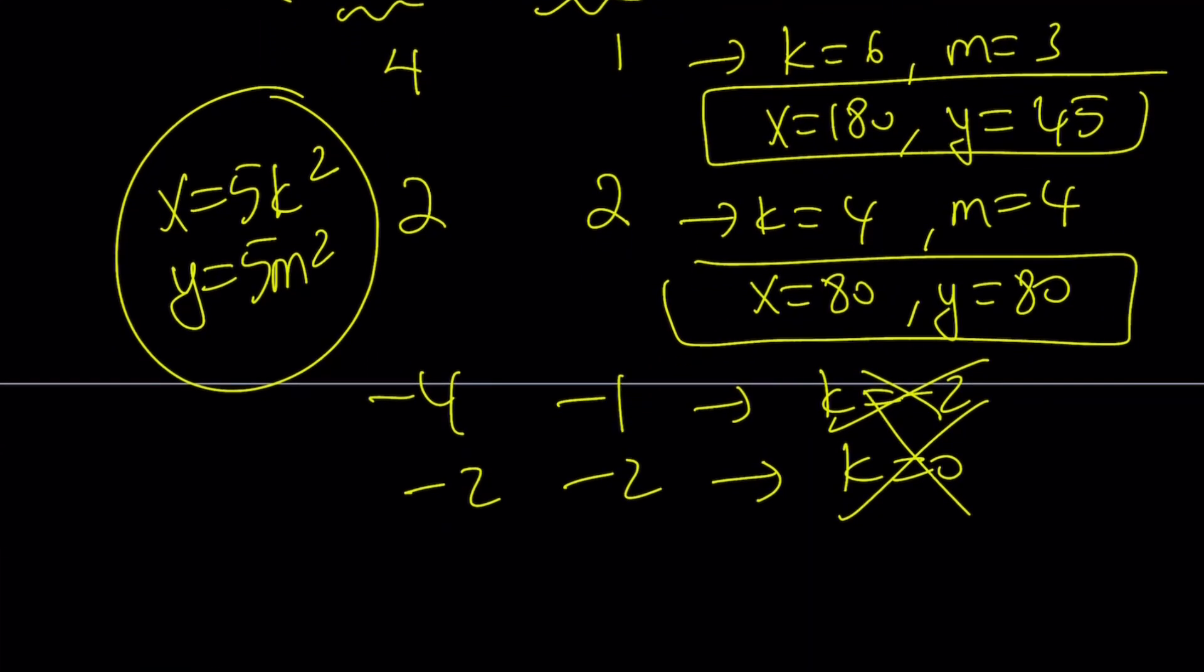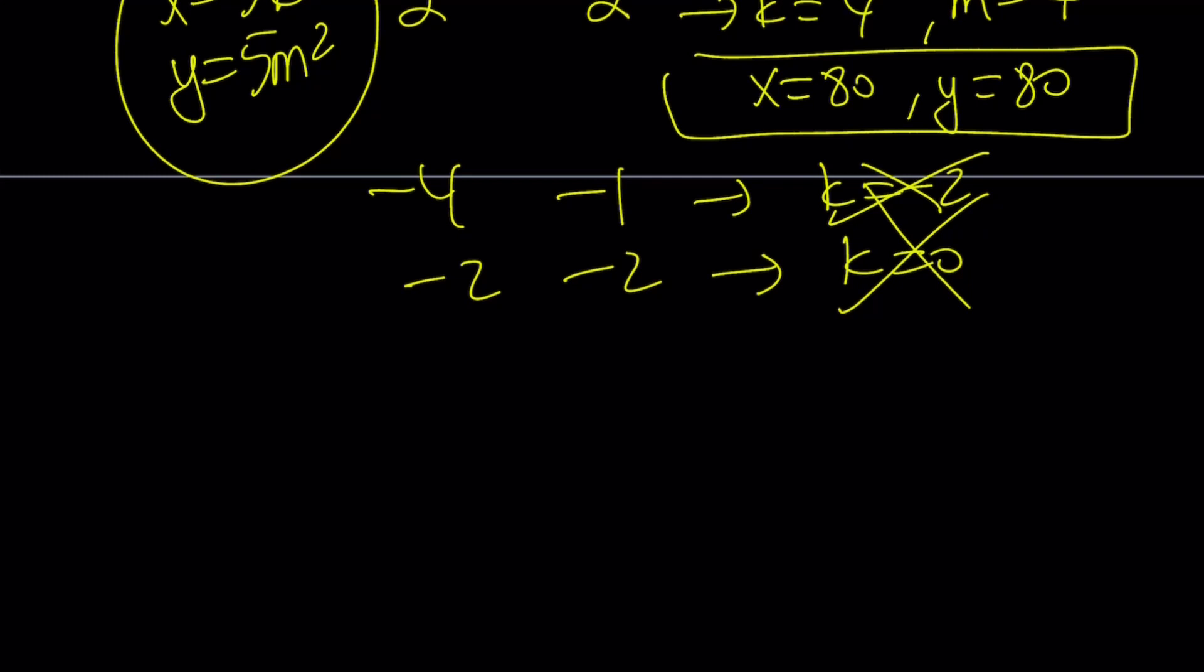So those are the possibilities. Let's go ahead and write our solutions as ordered pairs. We got 180, 45. And of course we can flip this and write 45, 180. And of course 80, 80 is perfectly symmetrical.